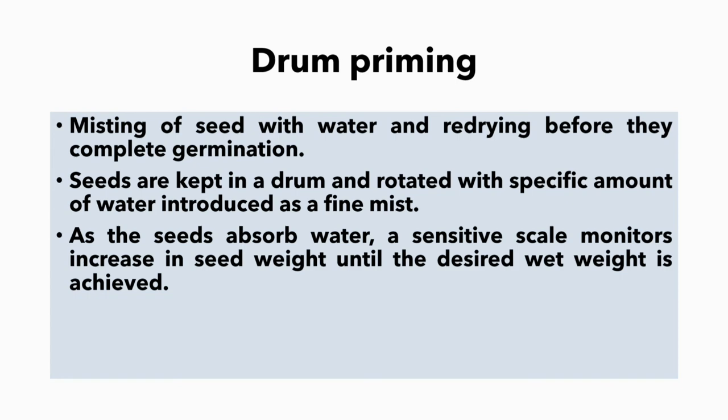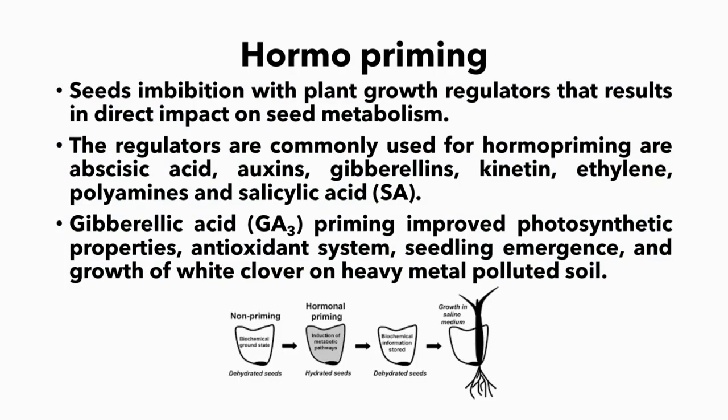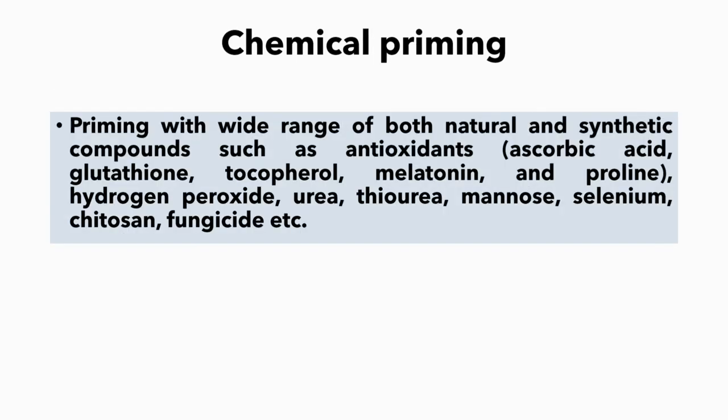Hormo priming refers to seed imbibition with plant growth regulators that results in a direct impact on seed metabolism. The regulators commonly used for hormo priming are ascorbic acid, auxins, gibberellins, kinetin, ethylene, polyamines, and salicylic acid. Gibberellic acid priming improves photosynthetic properties, antioxidant systems, seedling emergence, and growth of white clover on heavy metal polluted soil.